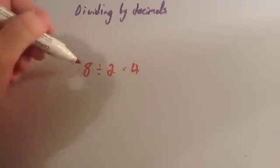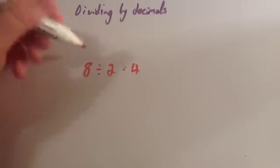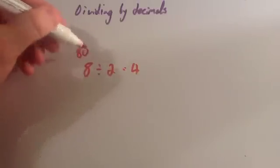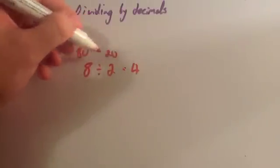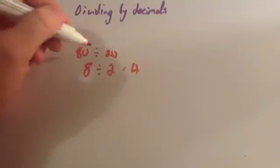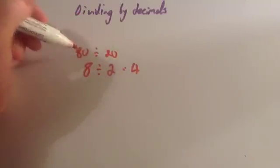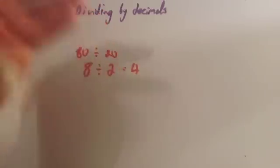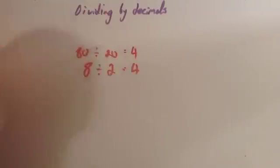What I'm going to do is multiply both of these numbers by 10. So I'm going to get 80 and 20, and I'm going to do 80 divided by 20. How many 20s go into 80? Well there's 20, 40, 60, 80 — so the answer to that is 4.